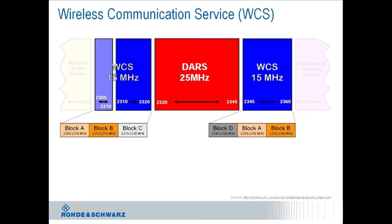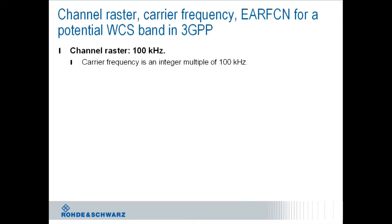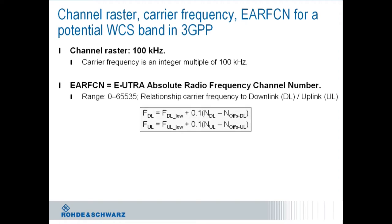Let's review quickly what is impacting a frequency band's definition for 3GPP in general. First there is a channel raster for LTE that is fixed with 100 kilohertz, that means the carrier frequency is an integer multiple of 100 kilohertz. With that said, the carrier frequency is generally designated by the UTRA absolute radio frequency number, short EARFCN. The EARFCN is in the displayed range. The relationship between carrier frequency for downlink and uplink is given by the displayed equation.